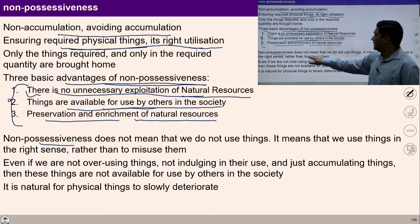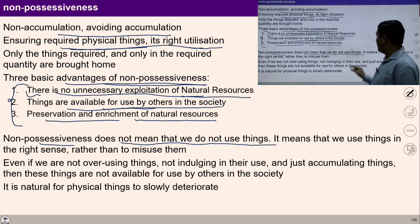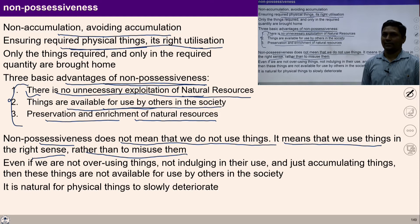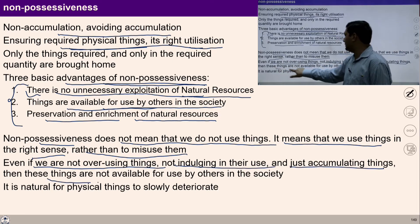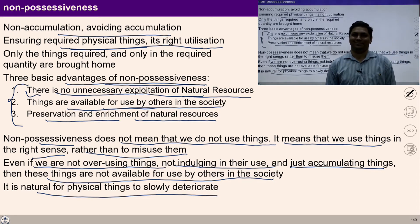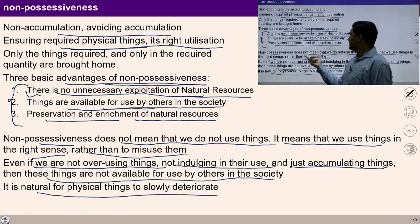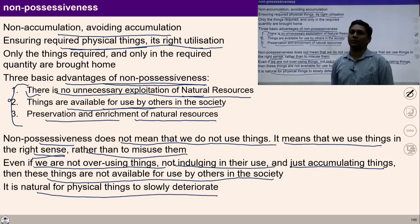Non-possessiveness and non-accumulation do not mean that we do not use things. It means we use things in the right sense rather than misuse them. Even if we are not overusing things but just accumulating them, those things are not available for use by others in society. Non-accumulation means using things according to our need in the right sense. I hope you have understood non-possessiveness and non-accumulation.